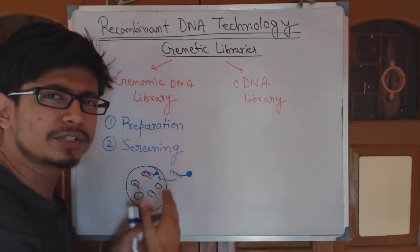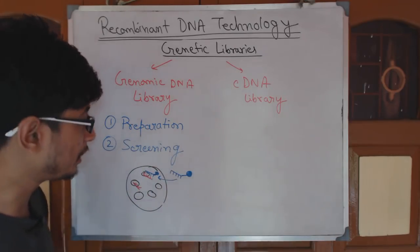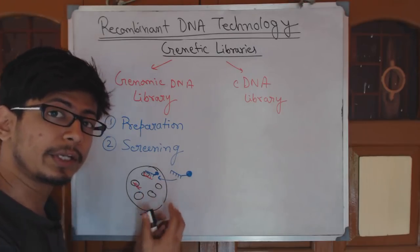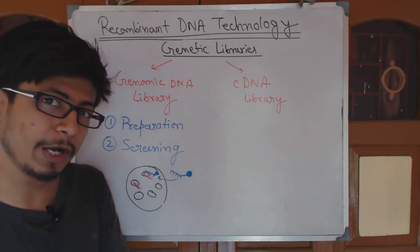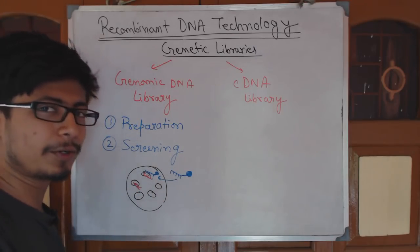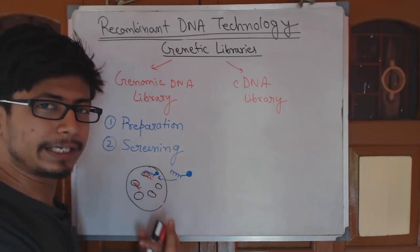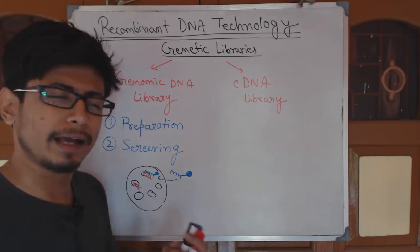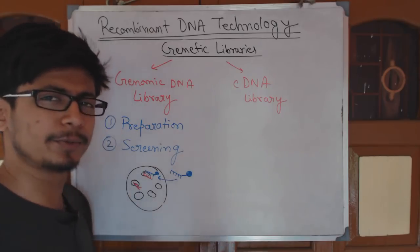You add that probe, and whenever that complementary sequence is found it will bind and give you a signal — a fluorescent signal — which you can receive. By receiving that signal you can tell the exact location of your gene in the whole library. This is one way to screen. There are multiple ways to screen genomic libraries, but this is a way. You can screen your DNA out and then take it out to do experiments with your gene.